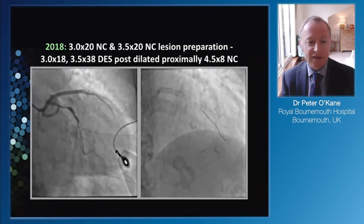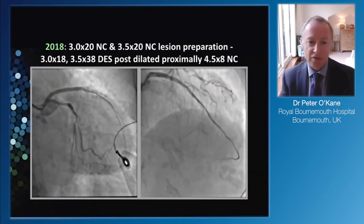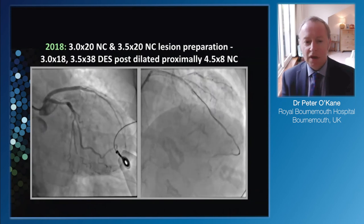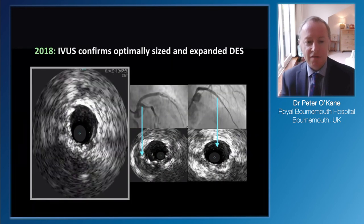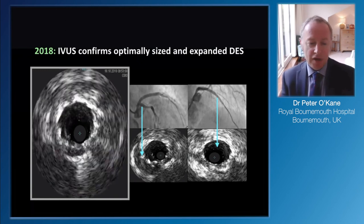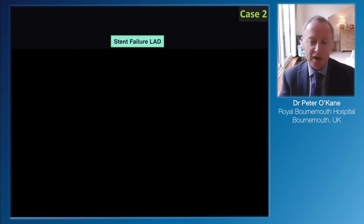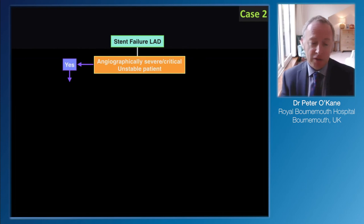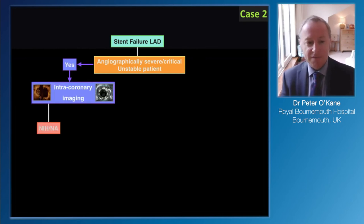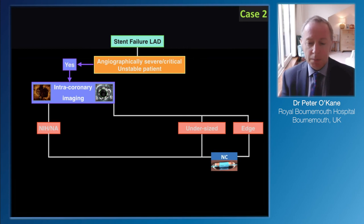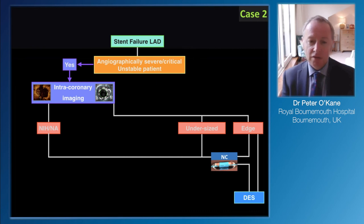Because it's a first generation stent, we're going to focus on using a contemporary drug-eluting stent. We balloon up further with a 3.5 non-compliant balloon and use a couple of stents - a 3.0 distal and a 3.5 back to the ostium - then use a 4.5 balloon to really expand according to the IVUS criteria. The angiographic appearance is very favourable, and similarly the IVUS images show very nice expansion throughout, particularly at the ostium. Through the algorithm: stent failure in the LAD, obviously critical so we don't need a pressure wire, go straight to coronary imaging to define the problem, find mixed NIH and undersizing with edge problem, mainly non-compliant balloon, put in new drug-eluting stents, and get a good result.